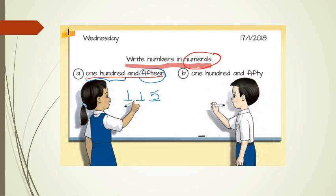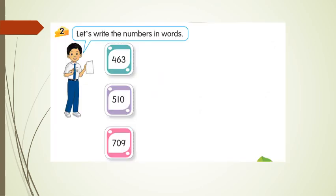So one hundred and fifteen is one, one, five — that is 115. Now for B: one hundred and fifty. It's the same thing — it must have three digits. So one hundred and fifty is one, five, zero — that is 150. Now we'll move on to example two.